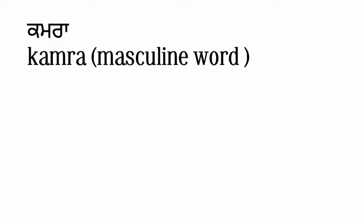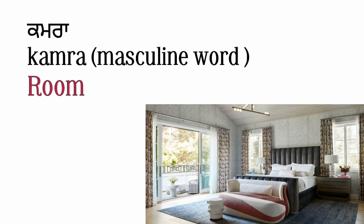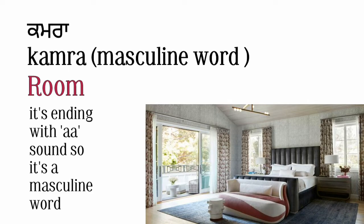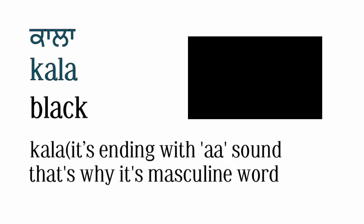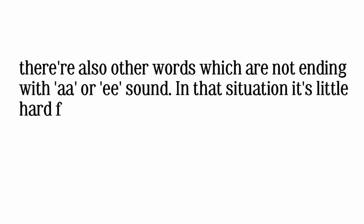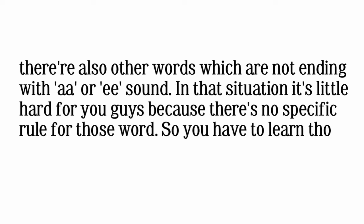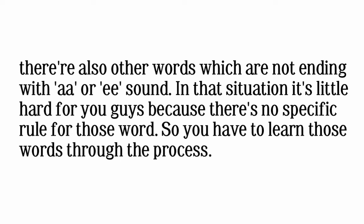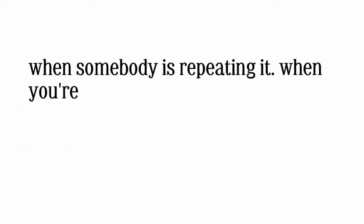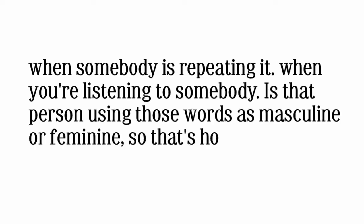Another word: 'kamara' means room — it ends with 'a', so it's a masculine word. Another word: 'kala' means black — it ends with 'a', so it's also masculine. For words that are not ending with these sounds, it's a little harder because there are no specific rules. You have to learn those words through practice — by repeating and listening to how native speakers use them as masculine or feminine.